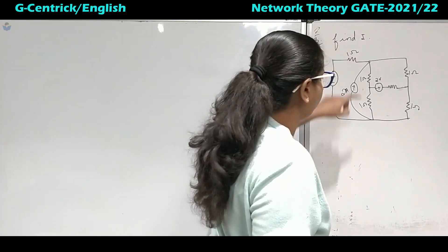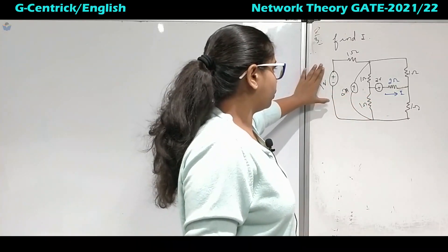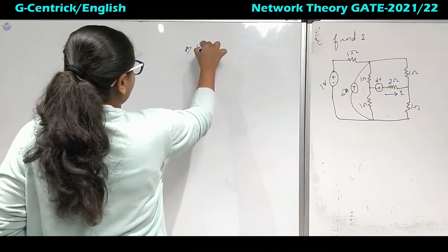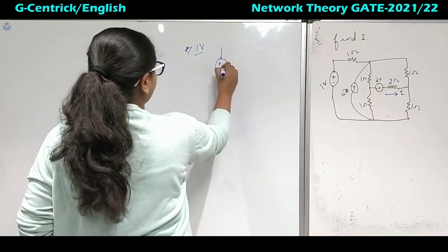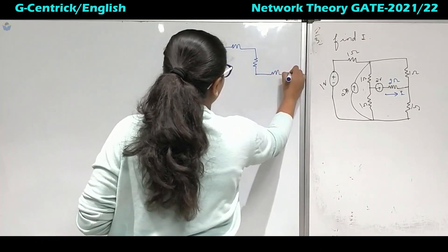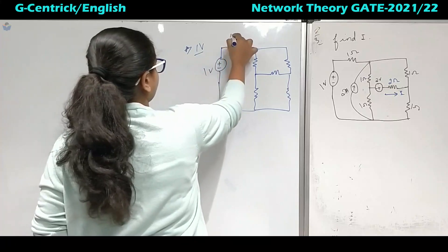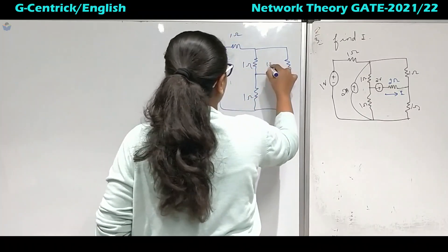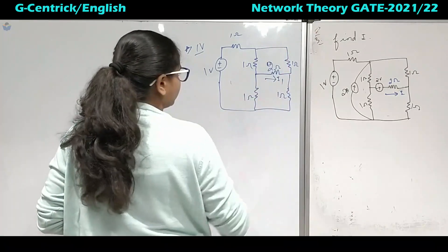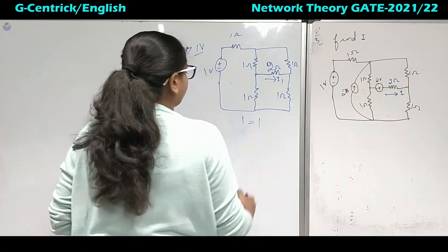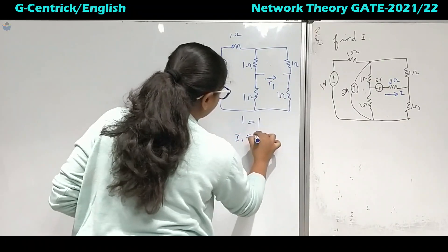Next problem: we are given a circuit and we need to find current I through a 2 ohm resistor. First, keeping 1 volt active, the current source becomes open and another source is shorted. The circuit has 1 ohm, 1 ohm, 2 ohms, 1 ohm, and 1 ohm. Noticing the zigzag pattern — opposite terms 1 into 1 equals 1 — this is a balanced Wheatstone bridge, so I1 = 0.